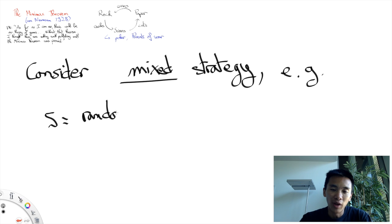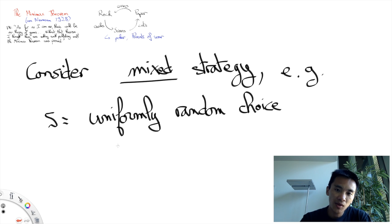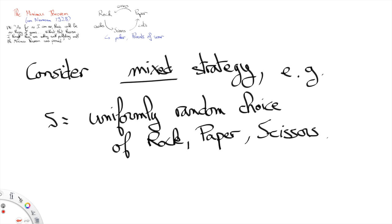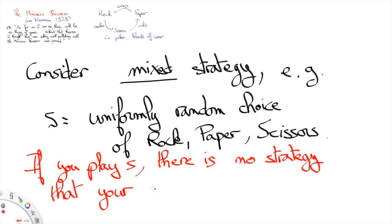As an example of that, consider playing randomly Rock Paper or Scissors with equal probabilities. Then your opponent will not be able to devise a strategy that's going to beat you.